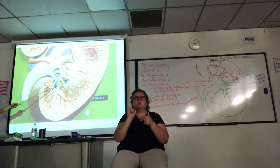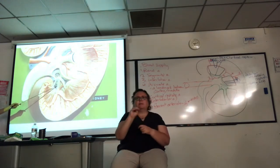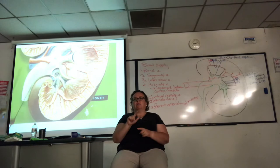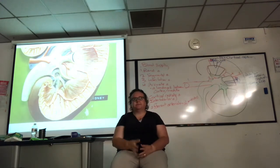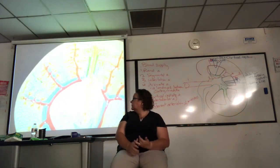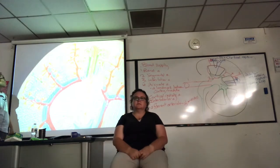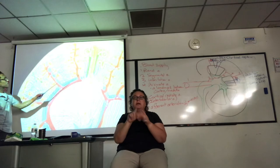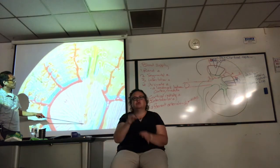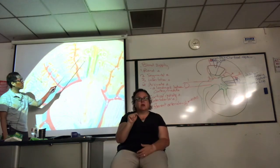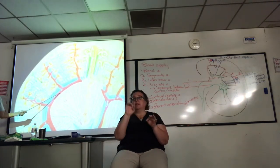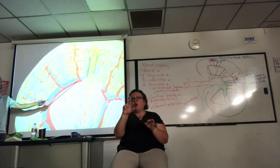Which calyx is which? The minor calyx is connected to the pyramid tip, the major calyx collects from multiple minors, and then there's the renal pelvis. What's the vertical orange thing? The collecting duct. Part of it is in the cortex, part in the medulla. Here's my landmark — the arcuate artery.